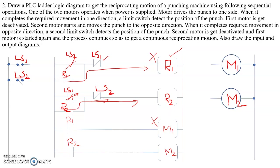R2 is now connected to motor M2, so motor M2 switches on and starts moving the plunger upwards. Once the plunger starts moving upwards, LS1 opens again, but because of the R2 latch, M2 continues running. When the plunger reaches the top and triggers LS2, its normally closed contact in the R2 rung opens, de-energizing R2. At the same time LS2 closes, re-energizing R1 and switching M1 back on — so the reciprocating motion continues.